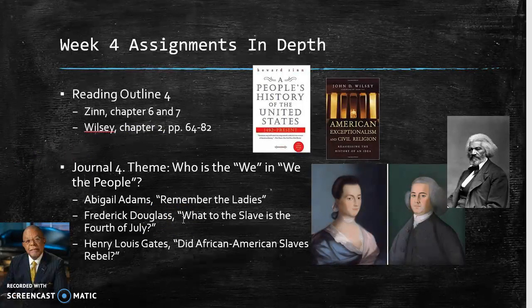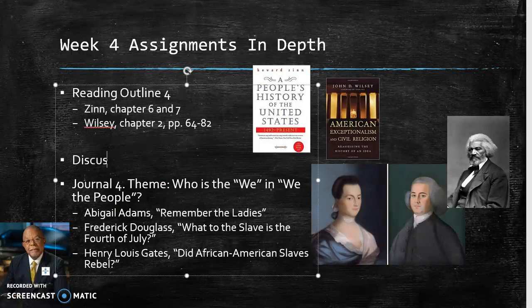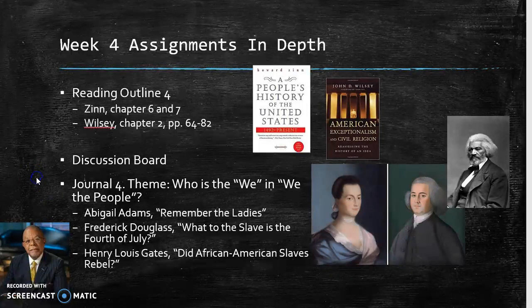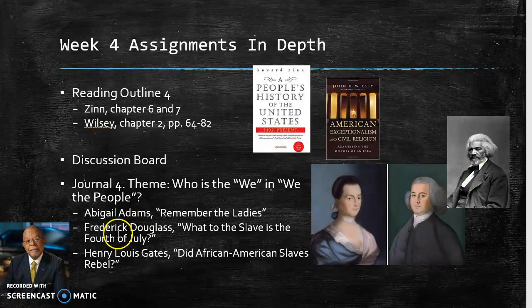Your week four assignments include reading outline four — that's Zinn chapters six and seven and most of Wilsey chapter two. You also have a discussion. For journal four, I'll talk more about that toward the end of this video, but the theme is who is the 'we' in 'We the People.' You're going to read two primary sources — one by Abigail Adams, one by Frederick Douglass — and a secondary source by historian Henry Louis Gates.